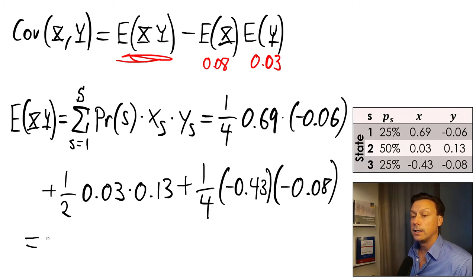We put this into our calculator and we're going to get that this expected cross product is 0.0002. So that means that this cross product is slightly positive.